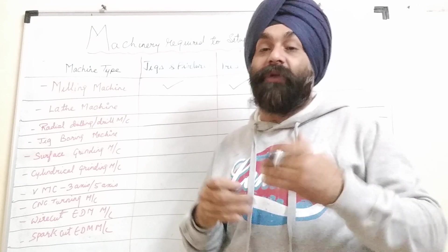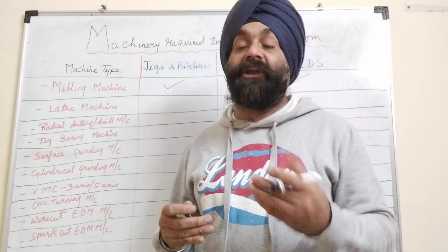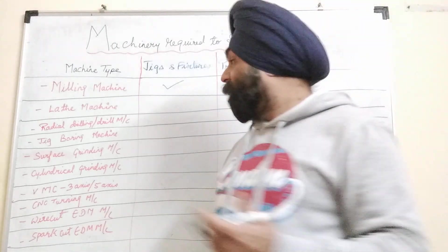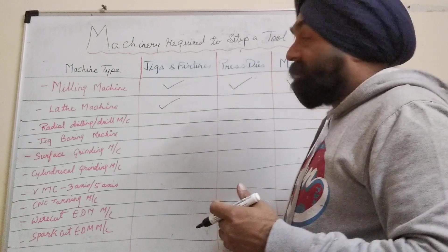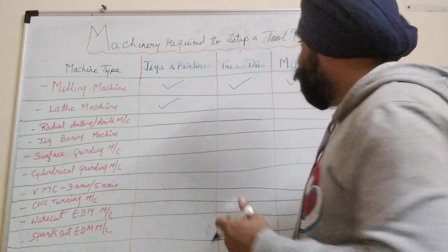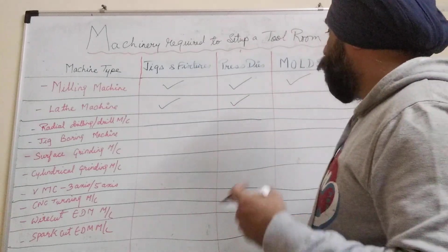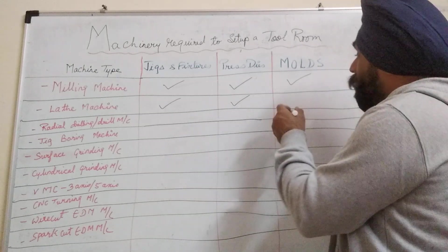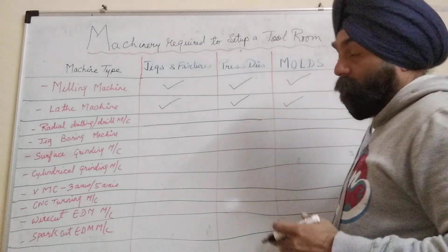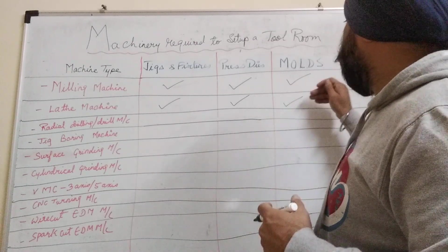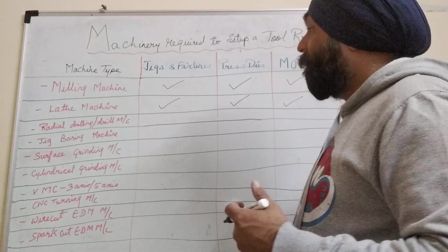Next is the lathe machine, which is used for cylindrical turning and machining. You'll need it for making punches, locators for jigs and fixtures, round dies, guide bushes, and round core or cavity components for molds.